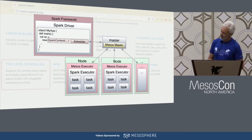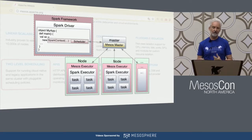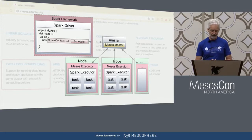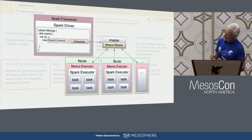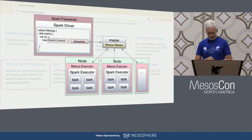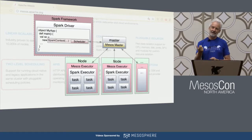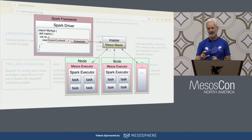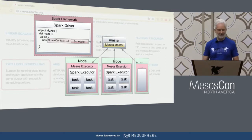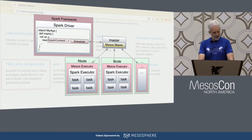That's the opposite of how YARN works, where information about what it means to run a Spark job is hard-coded in. Hadoop doesn't have the flexibility to run other things like file systems and databases. This diagram shows how Spark works: when you submit your job, the scheduler talks to the Mesos master, resources are allocated on different nodes under a Mesos executor, and inside that is a Spark executor running the tasks. Fun fact: if you read the original Mesos research paper, Ben actually invented Spark as a little framework to test the two-level scheduling idea.